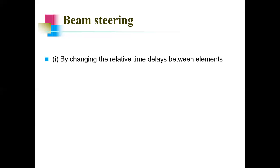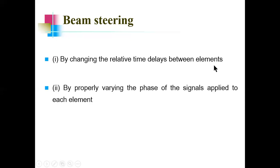The beam of a linear array can be steered in angle by changing the relative time delays between the elements — that is one way. Another way is by properly varying the phases of the signals applied, that is the relative phases of the signals applied to each antenna element. So basically these are the two ways: one is by changing the relative time delays, and one is by varying the phases of the signals applied to each antenna element.